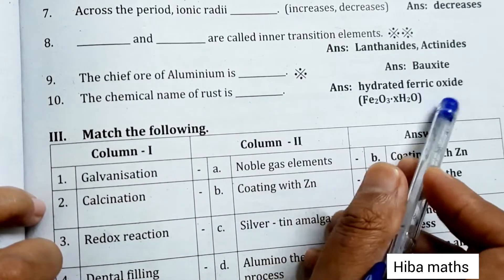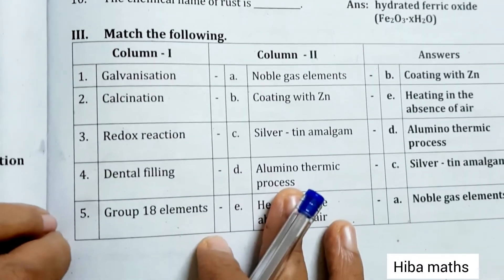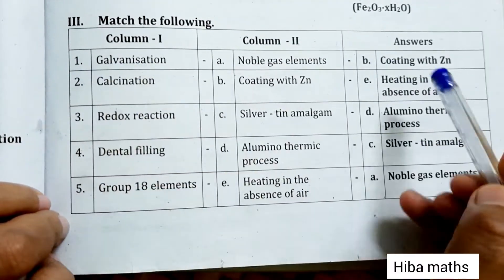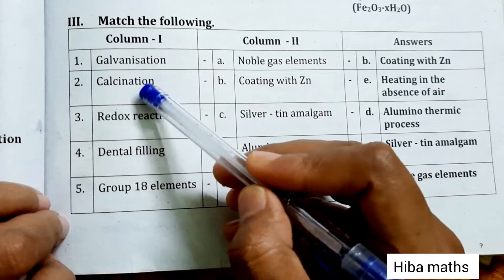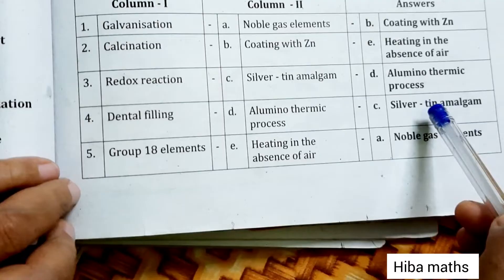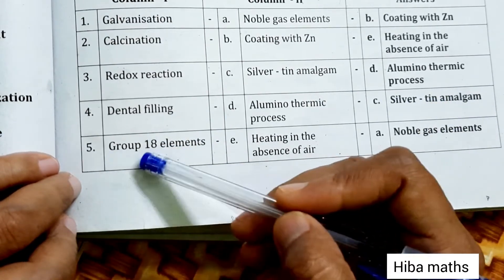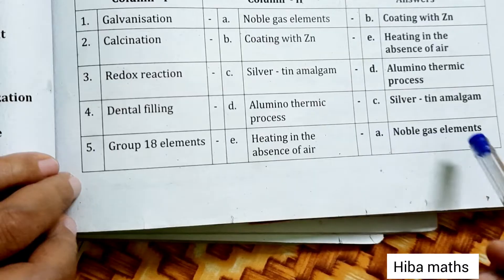Match the following: Galvanization - coating with zinc. Calcination - heating in the absence of air. Redox reaction - aluminothermic process. Dental filling - silver tin amalgam. Group 18 elements - noble gas elements.